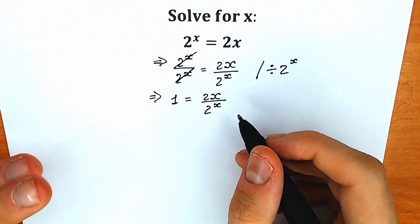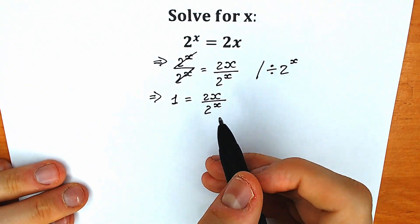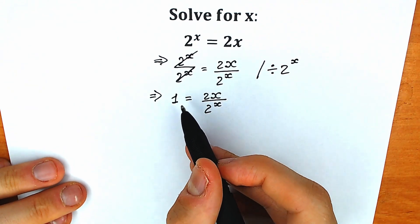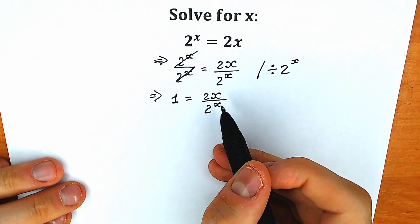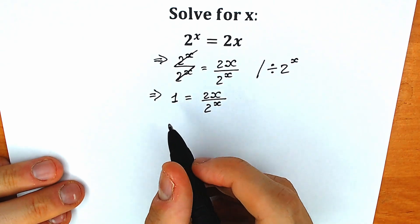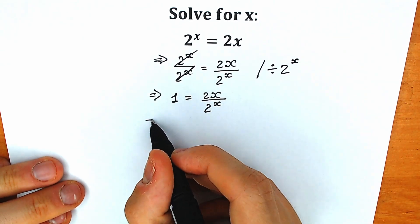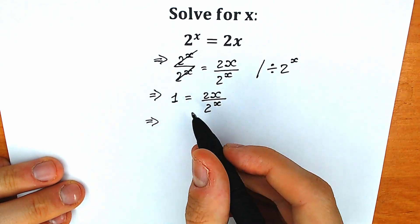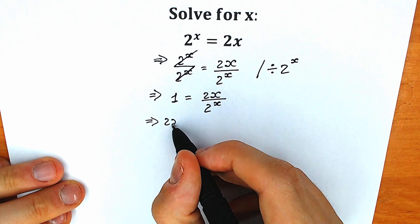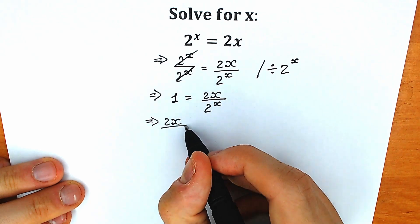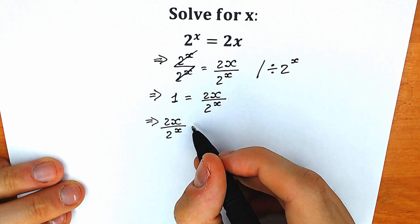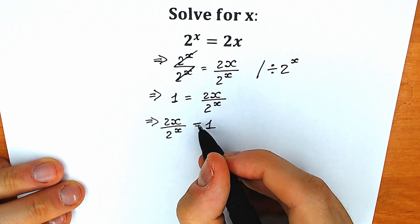The next step — I'm going to change position because we prefer our constant on the right side, but right now we have it on the left side. So let's change position, which we can easily do since this is an equal sign. As a result, we have 2x over 2 to the power x equal to 1.